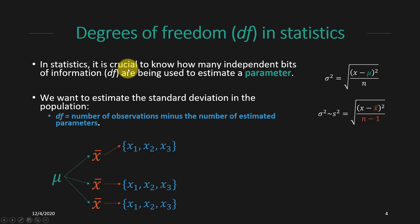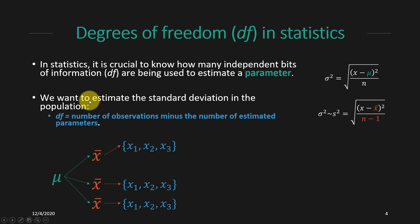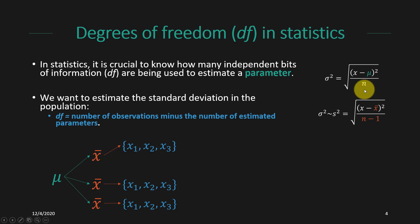In statistics it's crucial to know how many independent bits of information are being used to estimate a parameter. We take information from our sample to make estimates about what's going on in the population — we calculate statistics to estimate parameters. If we want to know the standard deviation in the population, ideally we could use the population variance formula where the variance is based on all the scores minus the mean squared, divided by n. Whereas in the sample we approximate that with the sample variance: the sum of all scores minus the mean squared, divided by n minus one.